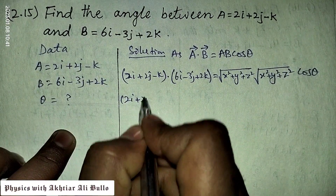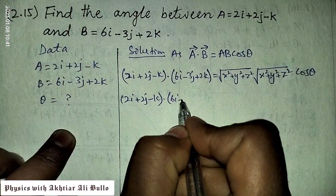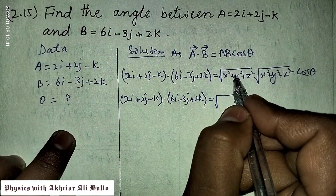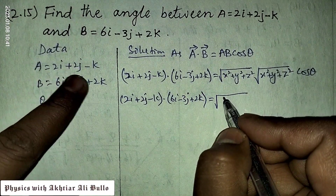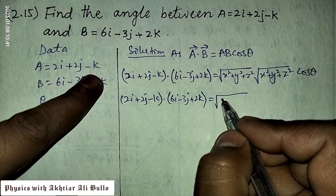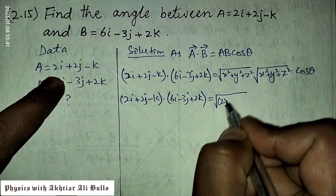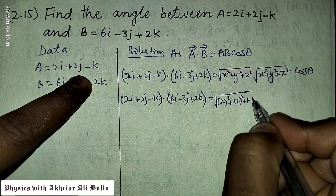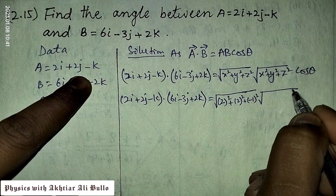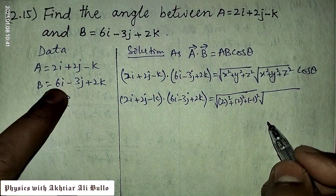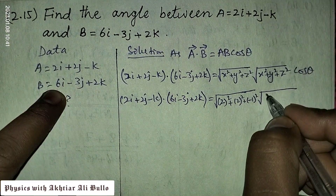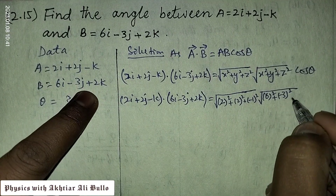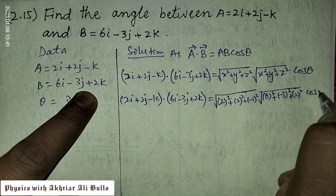So (2i + 2j - k) dot (6i - 3j + 2k) equals the magnitude of a times the magnitude of b times cos theta. The components of a along the x, y, and z axes are 2, 2, and -1 respectively, so we compute square of 2, square of 2, and square of -1 under the root. The components of b along x, y, and z axes are 6, -3, and +2, so we compute square of 6, square of -3, and square of +2, all under the root, into cos theta.